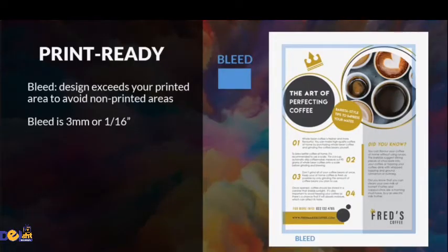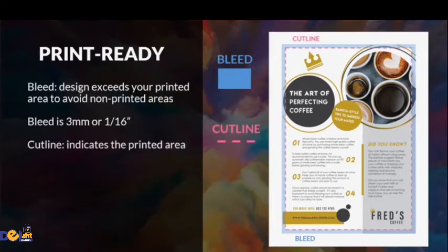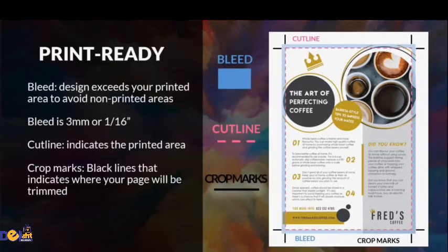Your bleed should be at least 3 millimeters away from your design edge, just as you can see in this example. The cut line indicates the print area of your design, which is the edge of your design — not the edge of your artwork. It is indicated here with dotted lines. Crop marks are black lines that indicate where your page will be trimmed, to avoid cutting out important parts of your design.